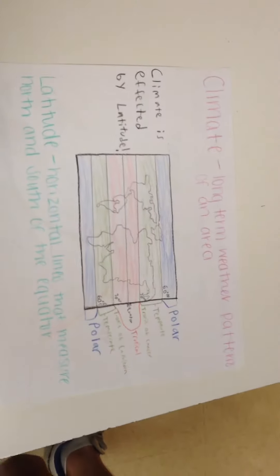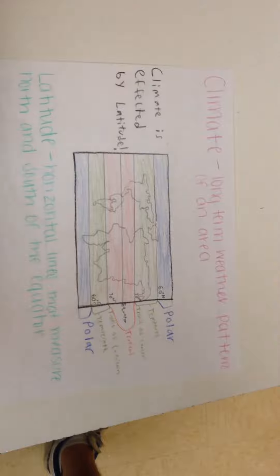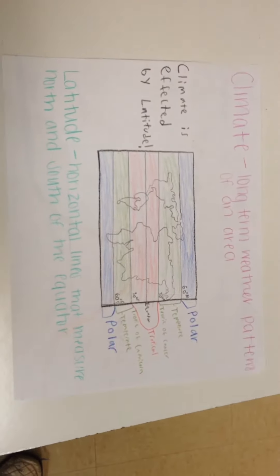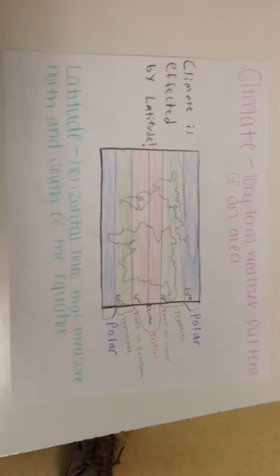Climate is a long-term weather pattern of an area. Climate is affected by latitude. Latitude is horizontal lines that measure north and south of the equator.